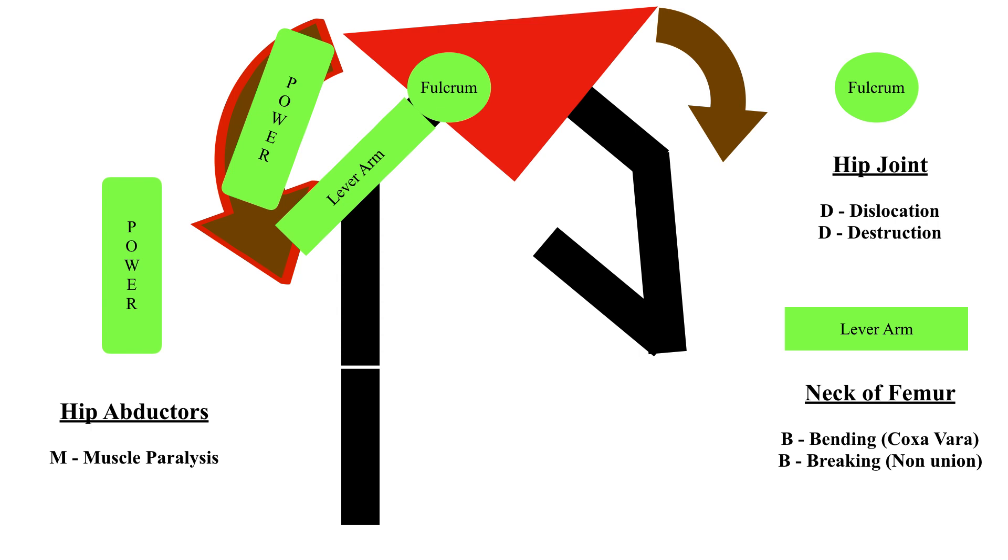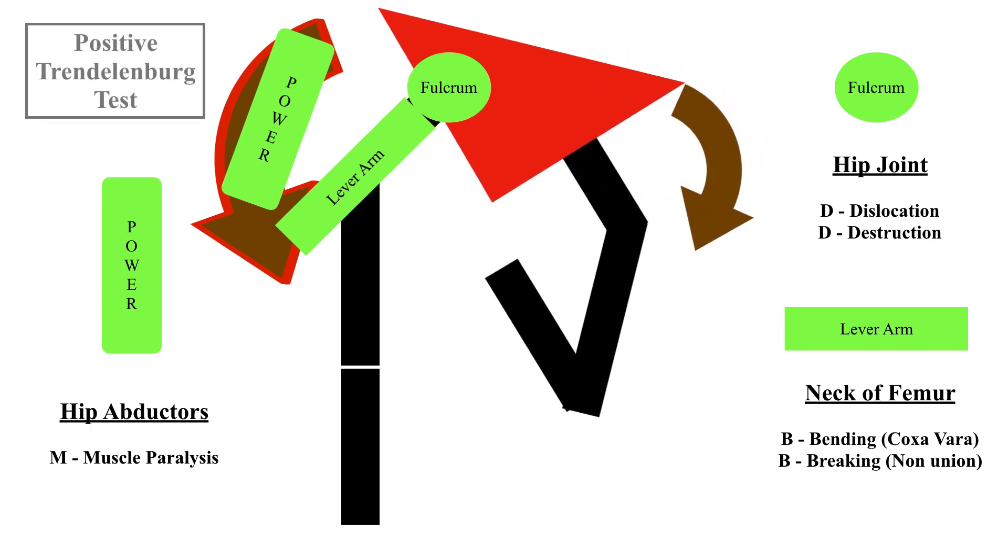The last M is muscle paralysis. What muscle? Again the hip abductor muscle paralysis. Various causes can cause abductor muscle paralysis including local muscular causes, spinal causes or cranial or central causes. So any cause which causes paralysis of the hip abductor muscle can result in power failure leading to positive Trendelenburg test. So the defect in fulcrum of the hip joint, lever arm or the neck of femur or power of the hip abductor muscle will result in dipping down of the pelvis on the unsupported side resulting in a positive Trendelenburg test.